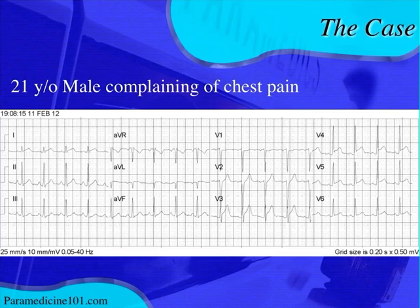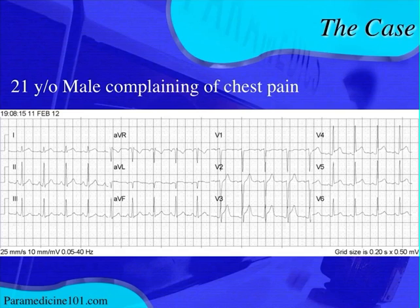A lot of people look for PR segment depression with acute pericarditis, and you do have some — you can see it in V3 and V4. PR segment depression makes the ST segment look a little bit more elevated than it actually is, which is why we try to compare the ST segment to the TP segment as the isoelectric line. Remember that PR depression is not always present with acute pericarditis and could be present with a myocardial infarction — it could be atrial ischemia. So it's not a good finding to definitively determine whether acute pericarditis exists.